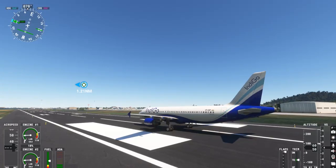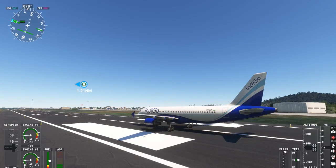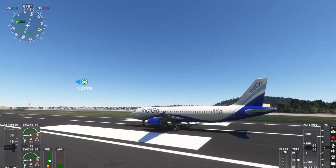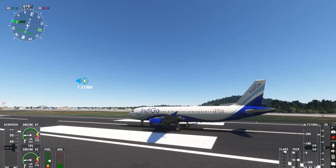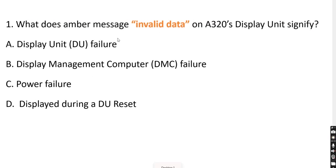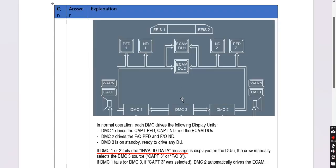A question from the previous Indigo airline examination for A320 First Officers was about the invalid data message. The question read: what does an AMBER message 'invalid data' on the A320's display unit signify? A. Display unit failure. B. Display management computer failure. C. Power failure. Or D. Display during a DU reset.